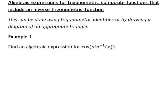For example, suppose we want to find a simple algebraic expression for cos of inverse sine of x. Using trigonometric identities firstly, we could do this by looking at the inside function here, which is inverse sine of x, and letting that be equal to theta.